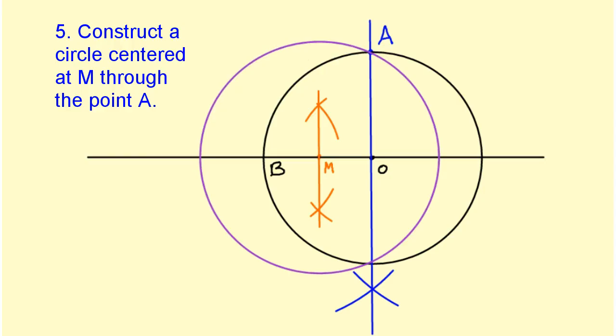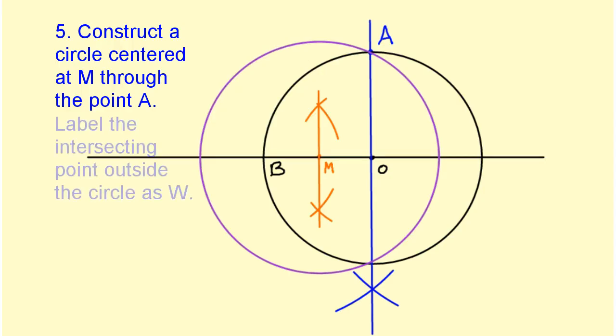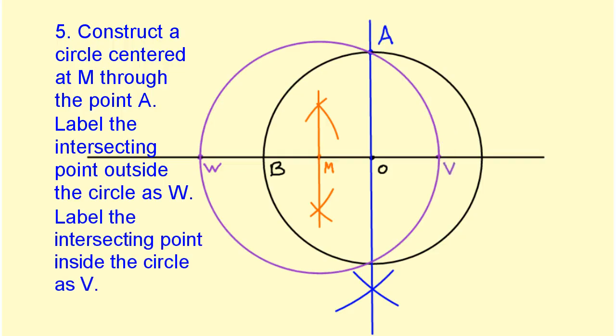Where the circle intersects our horizontal line outside our original circle, we're going to label that as W. We're going to mark the point inside the circle here as point V.